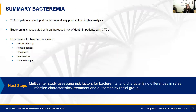In summary, 20% of patients with CTCL developed bacteremia in our analysis. Bacteremia was associated with increased risk of death, and risk factors included advanced stage, female gender, black race, invasive lines, and chemotherapy — the latter two of which are potentially modifiable. Our next steps include a multi-center analysis assessing risk factors for bacteremia, characterizing differences in rates, infection characteristics, and treatment outcomes by racial group, to understand why black patients had such a higher risk of developing bacteremia.